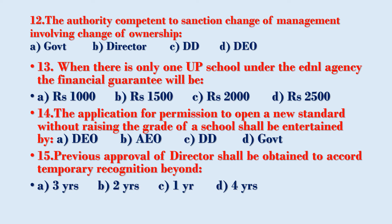When there is only one UP school under the educational agency, the financial guarantee will be: Option A – Rupees 1,000, Option B – Rupees 1,500, Option C – Rupees 2,000, Option D – Rupees 2,500. The application for permission to open a new standard without raising the grade of a school shall be entertained by: Option A – DEO, Option B – AEO, Option C – DD, Option D – Government.